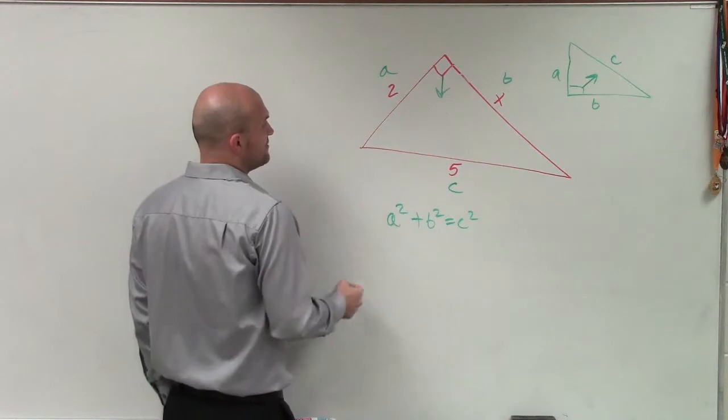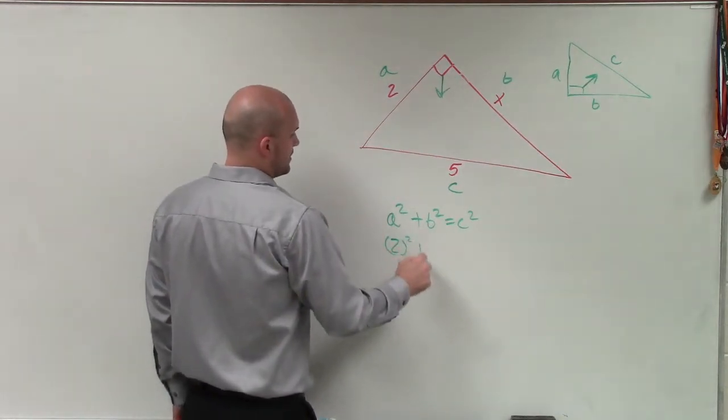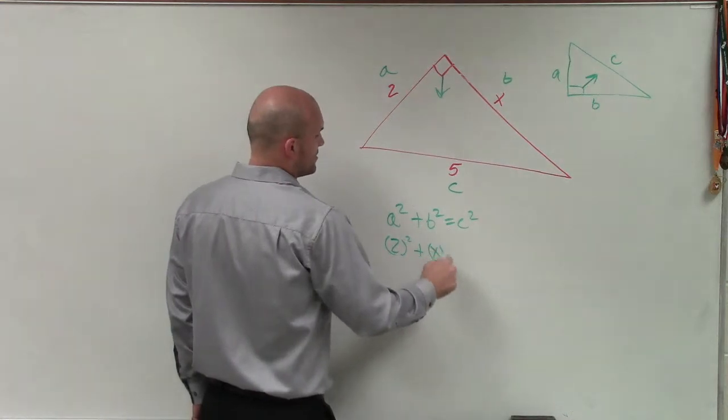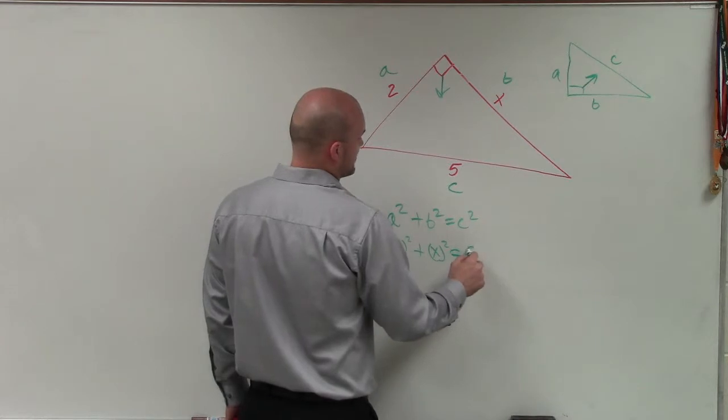So therefore, by plugging in values for A, B, and C: A is 2 squared plus B squared, which is x squared, equals C squared, which is 5 squared.